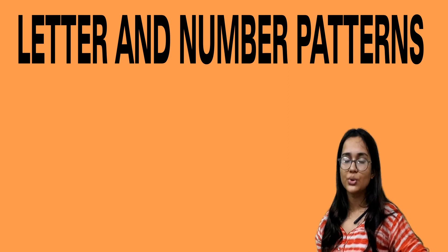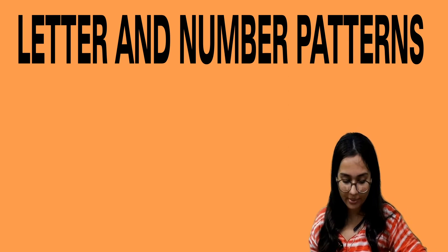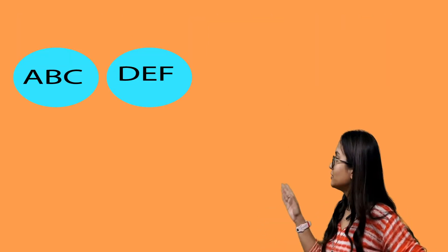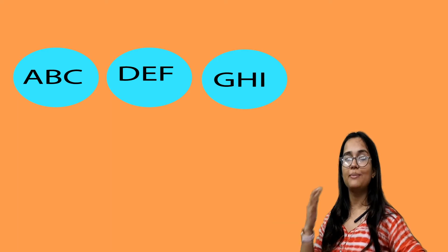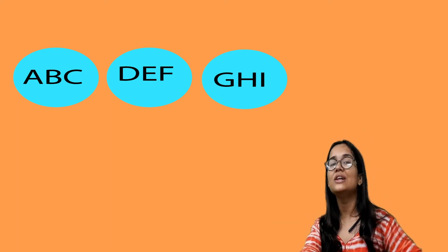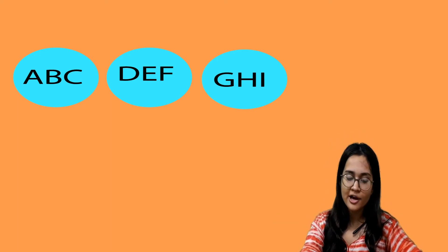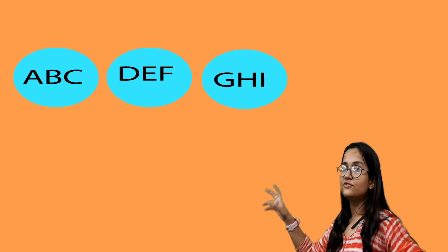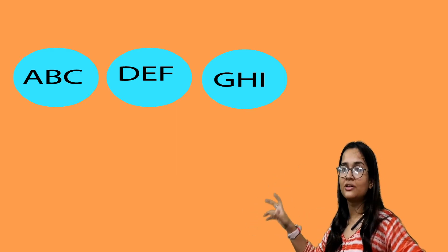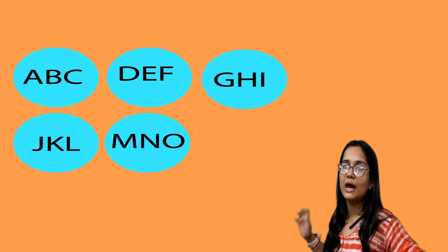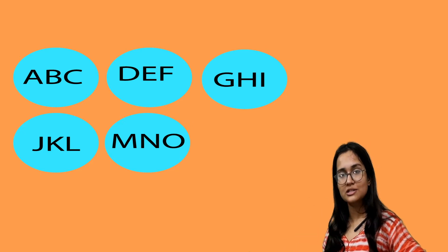We also have letter and number patterns. It shows A, B, C, D, then F, G, H, I and a blank. Three letters are being used at once. So after A, B, C and D, F, G, H, I, the next box will be J, K, L, then M, N, O — this is how the pattern continues.